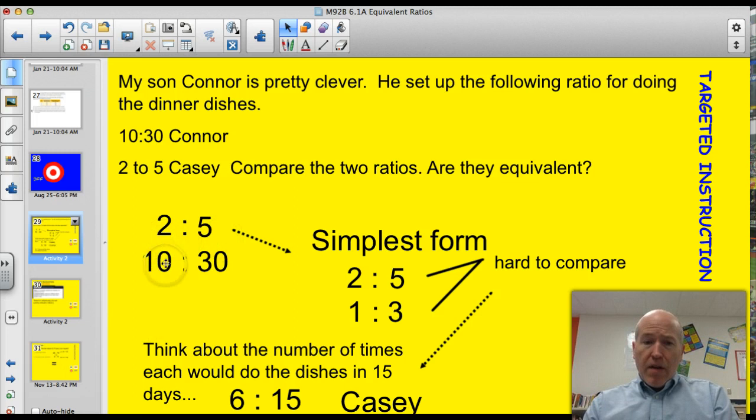Well, 2 to 5, 10 to 30. Looks like this guy is doing a lot more, Connor, because it's 10 to 30. But you really can't just base it upon judgment. You really need to express those ratios in simplest form and try to compare them that way. So I did that. 2 to 5 is in simplest form. 10 to 30, if I divide both sides by 10, I get 1 to 3.